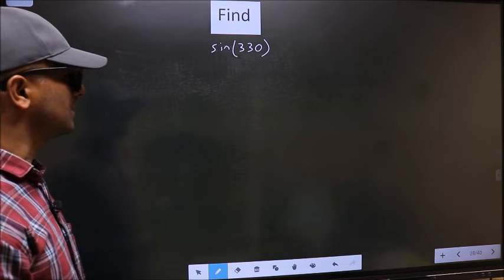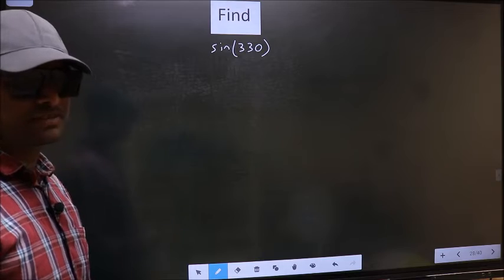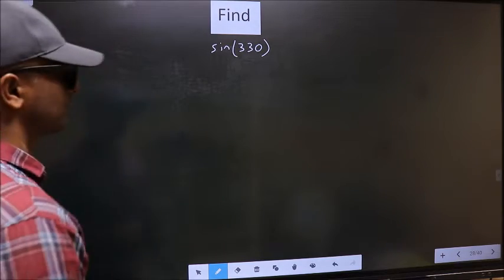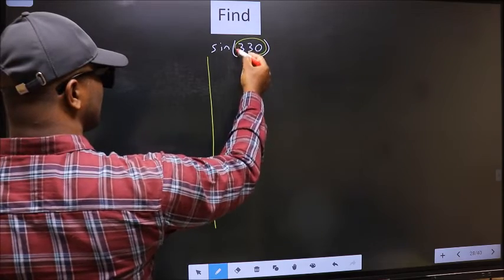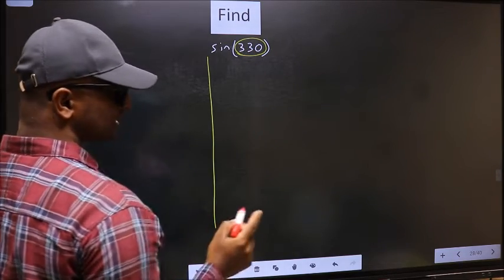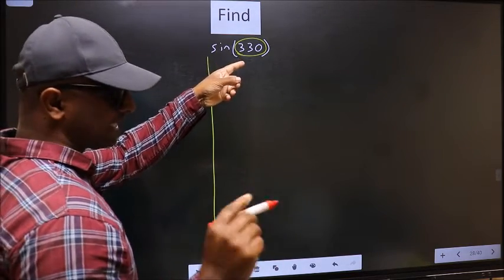Find sin 330. To find this, we should follow this method. Here we have 330. Now you should check, 330 lies between which multiples of 180?